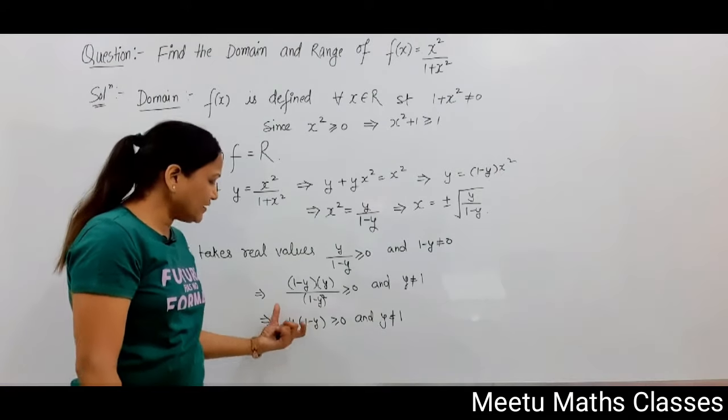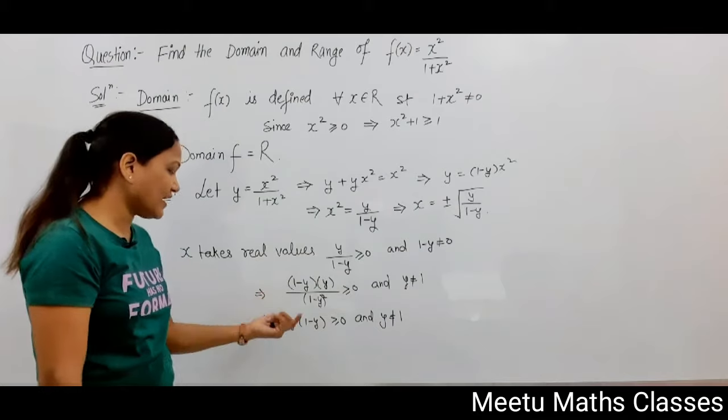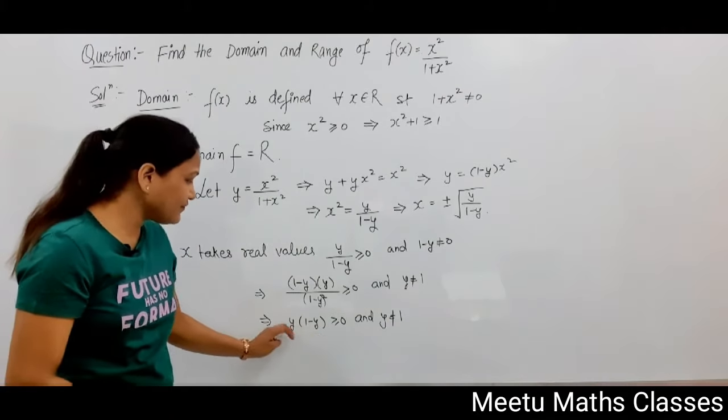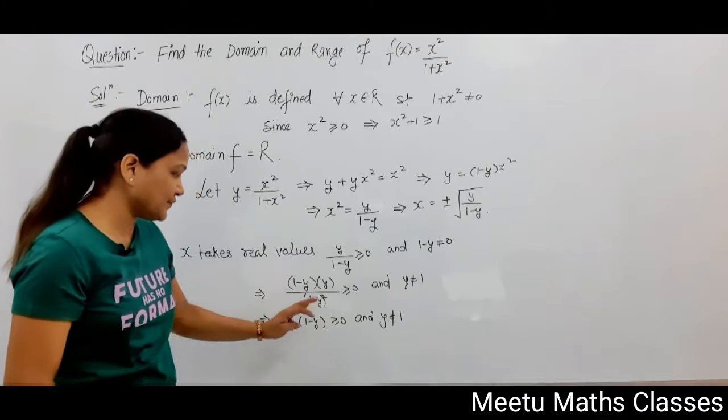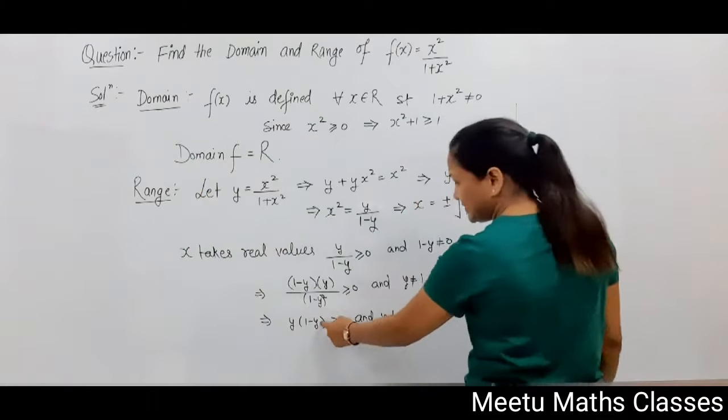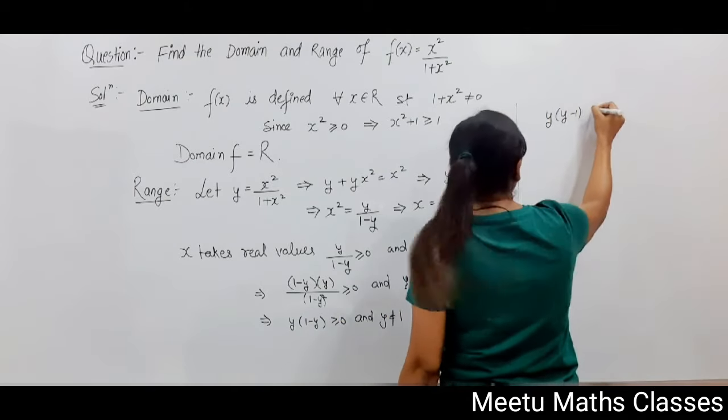Now you can observe this is a quadratic expression. First, make the y² coefficient positive by multiplying both sides with a minus sign. This gives y(y - 1) < 0.